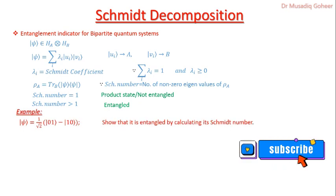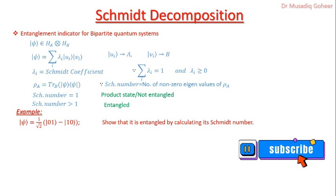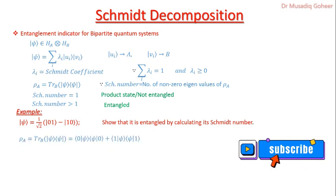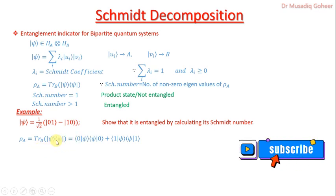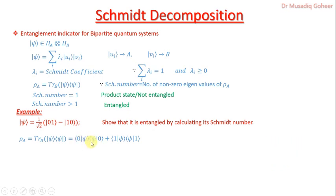To learn this algebra, let's take a simple example. We have a Bell state — quantum computing students can easily tell it is an entangled state — but we will show how to calculate the Schmidt number. Once you learn this method you can handle any complex quantum state. In the first step we determine the outer product of psi, then apply the trace on the second qubit. Since we are dealing with a bipartite system, we sandwich the composite density matrix between the zero and one basis.